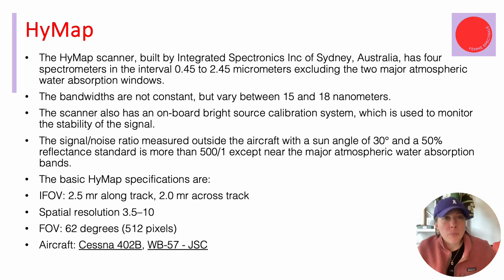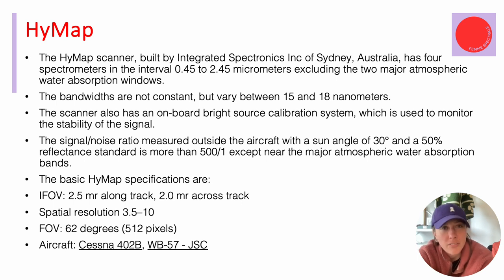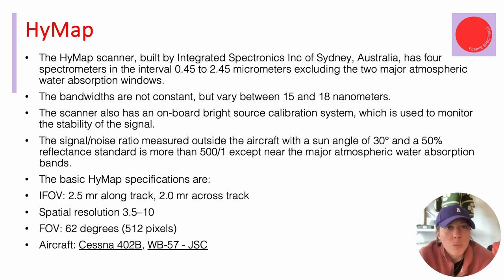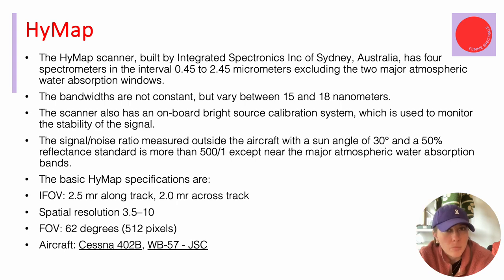HiMap is built by Integrated Spectronics Inc. of Sydney. It has four different spectrometers covering approximately 450 to 2,450 nanometers — 2,450 because the last 50 nanometers are usually very noisy in the detector. HiMap already excludes two major atmospheric absorption windows of water around 1,400 and 1,900 nanometers. It doesn't have constant bandwidth across the whole wavelength range, but it's between 15 to 18 nanometers. HiMap data is something you will come across if you're looking into hyperspectral exploration publications.